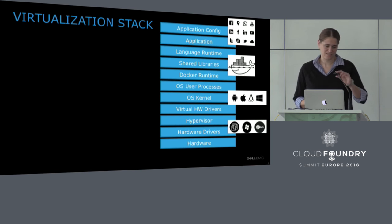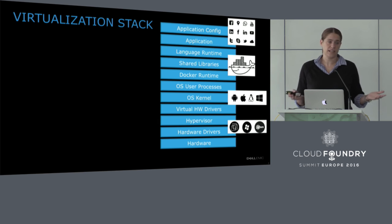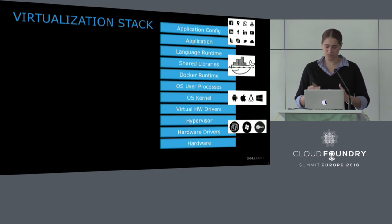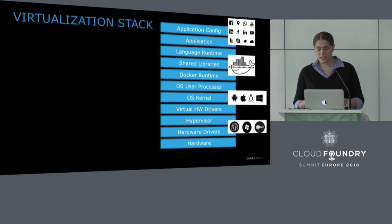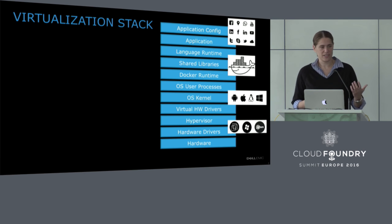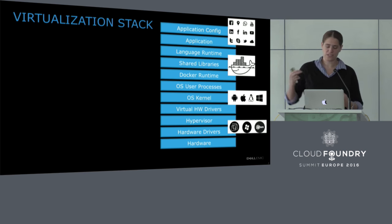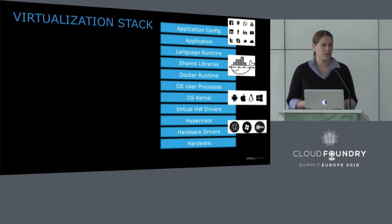So let's talk about the motivation. Why did we start working on these things? This is the stack as you know it when you start working with something like Cloud Foundry. Starting with the hardware — that's the first layer. On top of it you have the hypervisor, which has drivers. Then you have the guest OS on top of it, which also has drivers, the OS kernel, user processes. Then you have the Docker runtime, which is a great packaging tool, with shared libraries, language runtime, application, and application config. This is all the stack you're running every time you run Cloud Foundry.